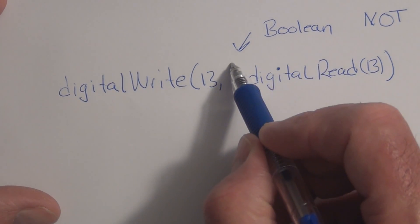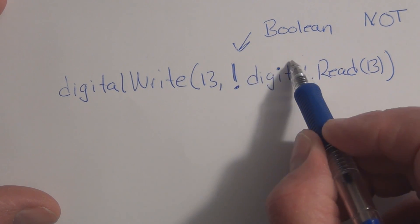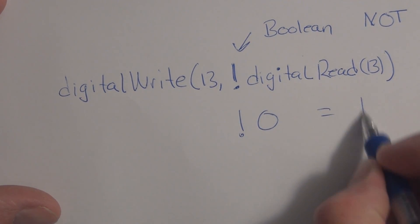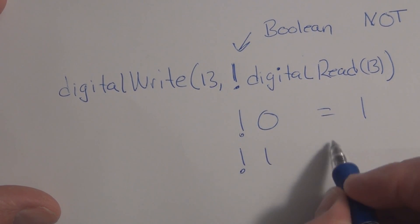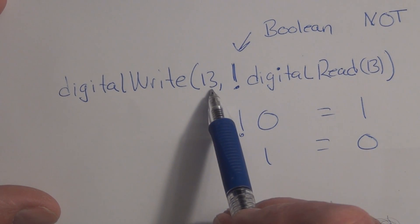This is NOT. So if this is a 0 and this is NOT 0, NOT 0 is a 1. So a NOT 0 is equal to a 1, and a NOT 1 is equal to a 0. That's another way to toggle pin 13 or an I/O pin.